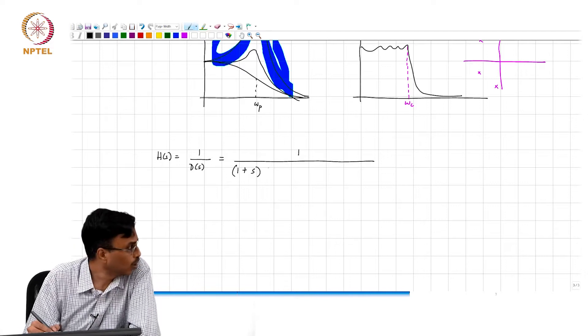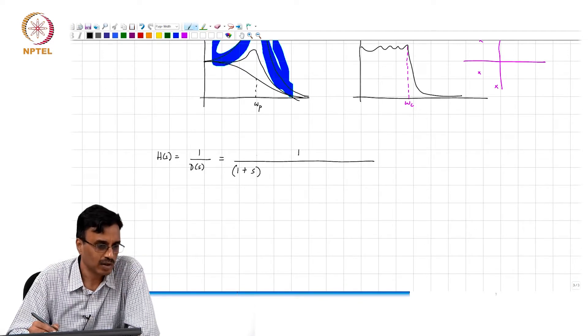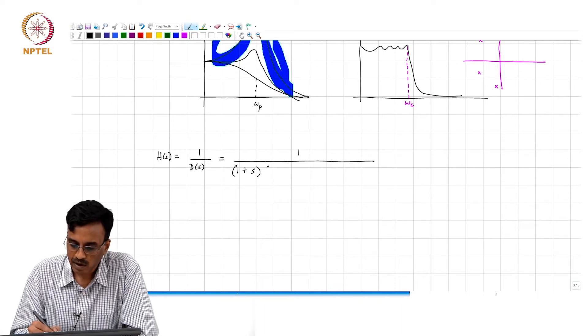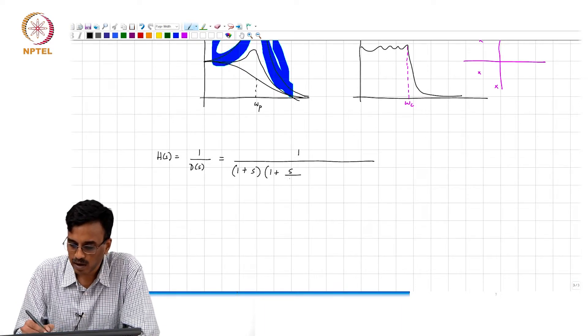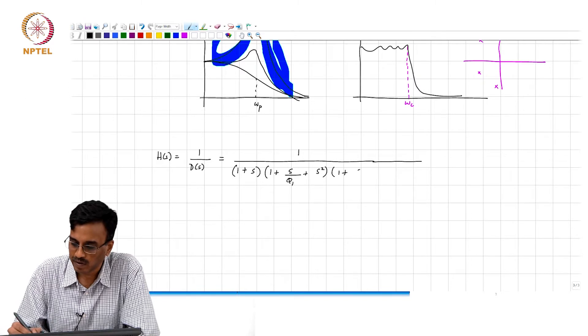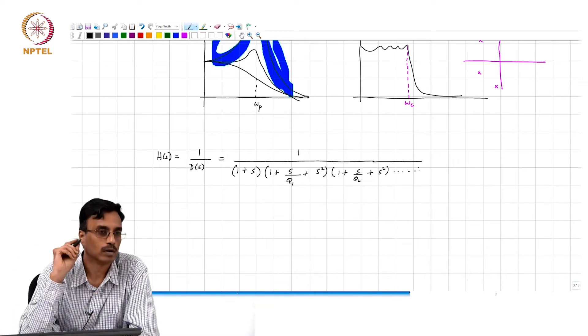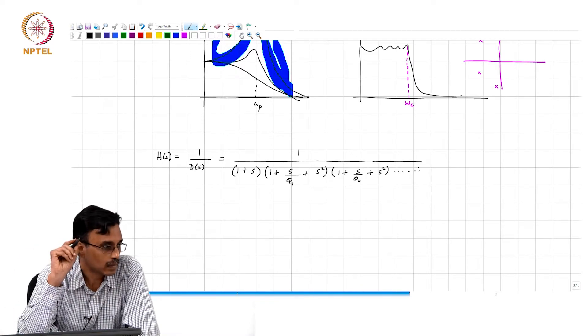For an even order Butterworth, there will be only complex conjugate poles and you basically have 1 over (1 + s/q1 + s^2) times (1 + s/q2 + s^2) and so on.